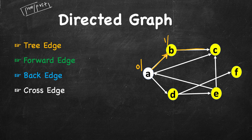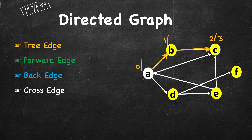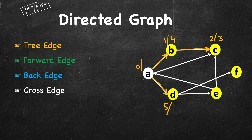Let's continue our depth first search. We start from A, which gets a pre time of 0 and post is empty. We reach B at time 1, then we take this edge and reach C at time 2. From C we cannot go anywhere else, so DFS finishes here at time 3. We come back to B — there is no other outgoing edge, so it finishes at time 4. We come back to A but there are other possibilities, so we take D at time 5.